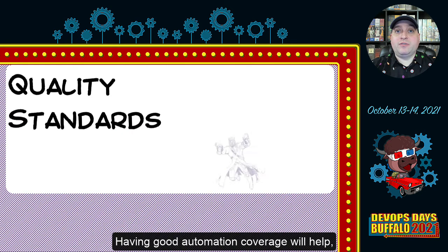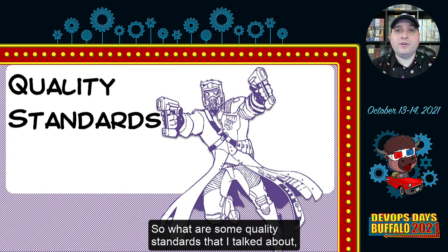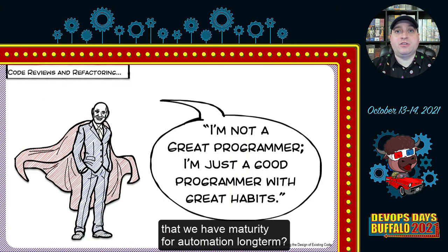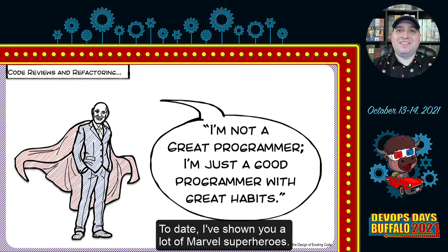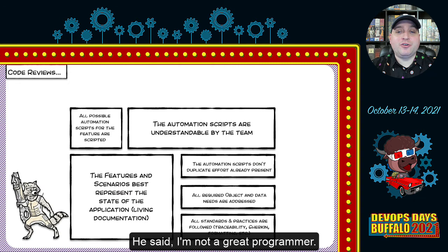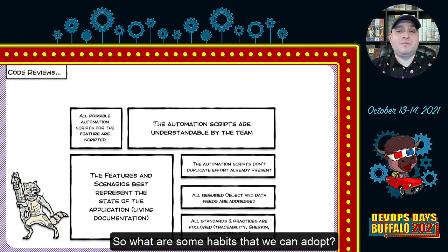Having good automation coverage will help improve your confidence level for releases to production. As for quality standards to ensure long-term automation maturity — here's my own superhero: Martin Fowler. He said, 'I'm not a great programmer; I'm just a good programmer with great habits.' So what are some habits we can adopt?